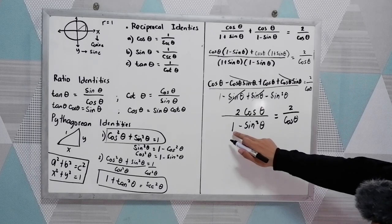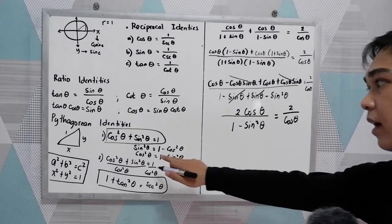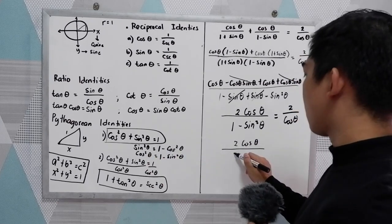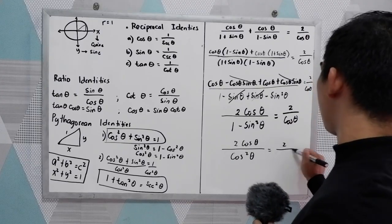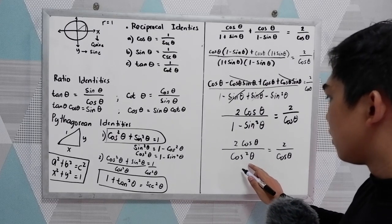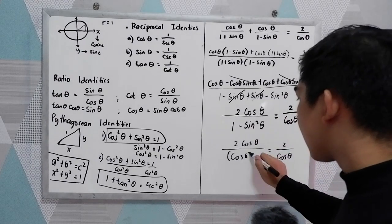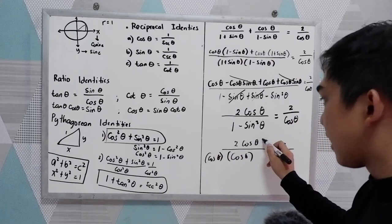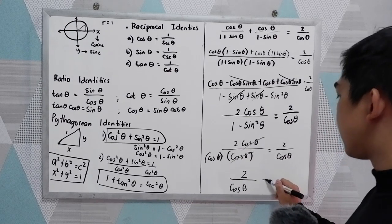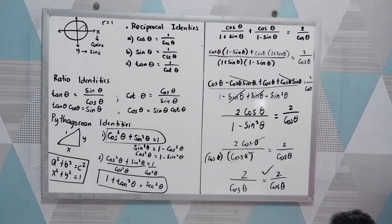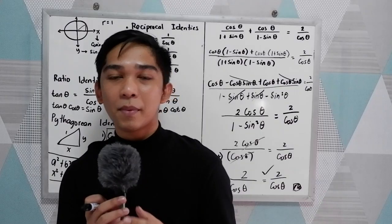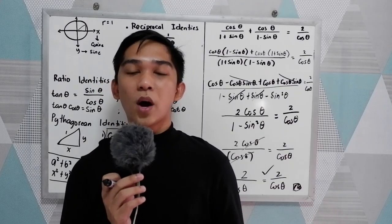From our Pythagorean identities, 1 − sine²θ = cosine²θ. So we copy: 2 cosine θ / cosine²θ = 2 / cosine θ. Since cosine²θ = cosine θ · cosine θ, we can cancel one cosine θ, giving 2 / cosine θ = 2 / cosine θ. They are equal — proven. That is the proving of trigonometric identities and the fundamental trigonometric identities. Thank you for watching Senior Pablo TV.